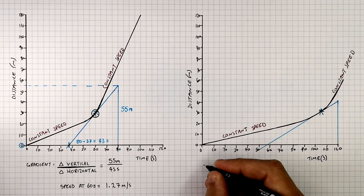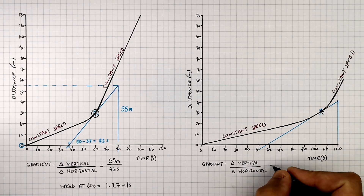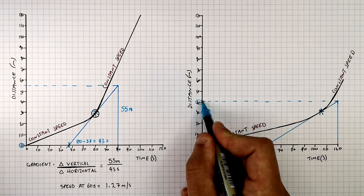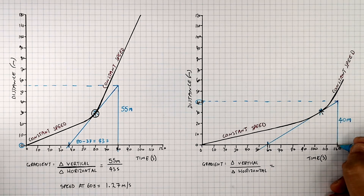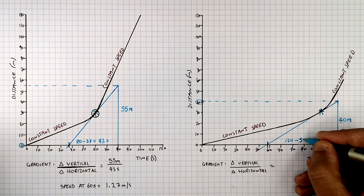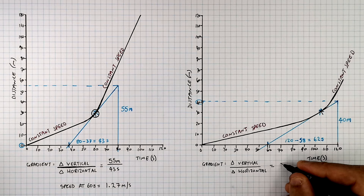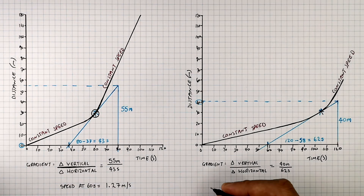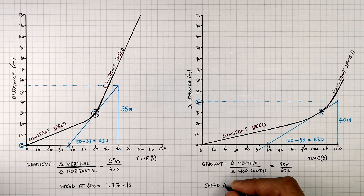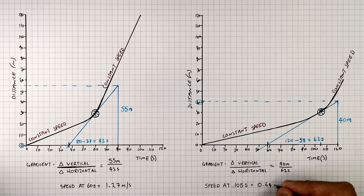So to work out the gradient of the tangent of the second graph, you need to do change in vertical divided by the change in horizontal. The change in vertical is 40 metres, and the change in horizontal is 120 seconds minus 58 seconds, which equals 62 seconds. So we can calculate the speed while the car is accelerating at 105 seconds: it's 40 metres divided by 62 seconds, giving a speed of 0.64 metres per second.